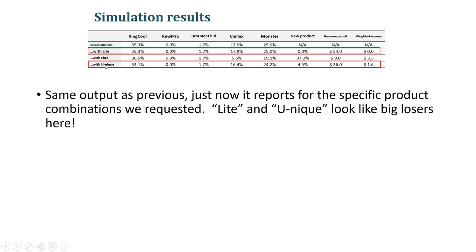With the unique version of the cooler, we would have a market share of about 5%, but our weighted revenue is relatively meager. The elite option, in fact, seems pretty worth entertaining — a relatively high market share and quite strong weighted revenue. In a world where we could only pick from these three options, it's pretty clear we should bring the elite version of the cooler to market first.